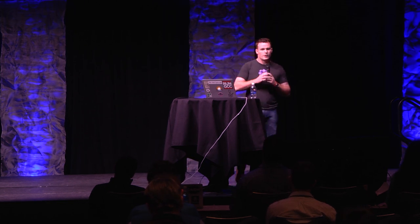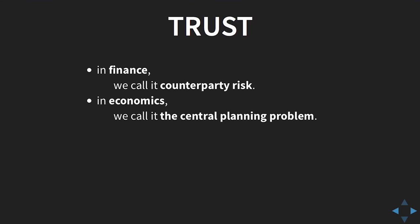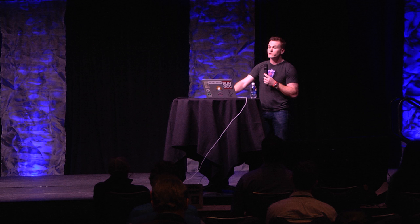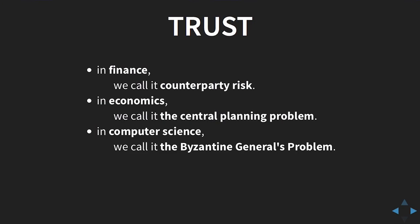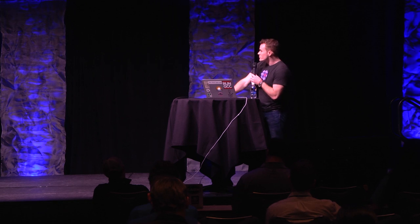In finance, we call it counterparty risk — those of you who work in financial services are familiar with this. In economics, we call it the central planning problem: the further away the decision maker gets from the individual constituents, the less effective their decision making is. And in computer science, we call it the Byzantine generals problem. You have a cluster of nodes, a set of servers or machines doing some work, and you don't know which has been compromised or has had a bit flipped or a corrupt hard drive.